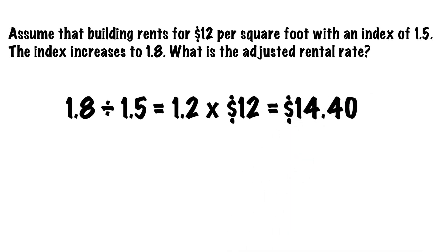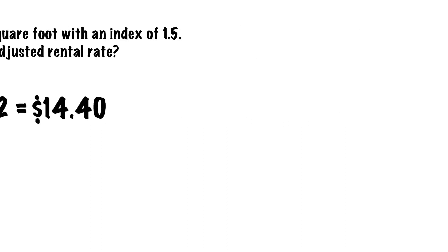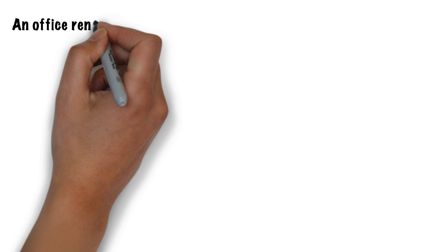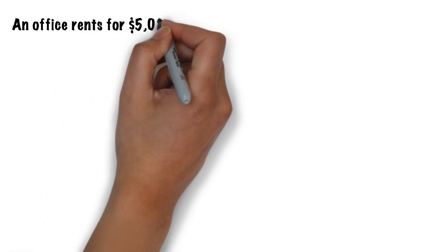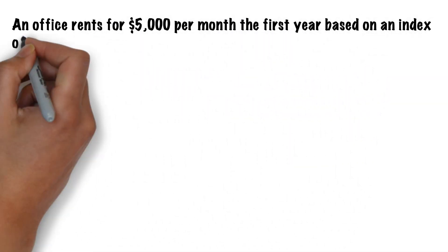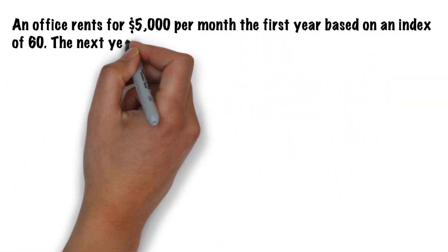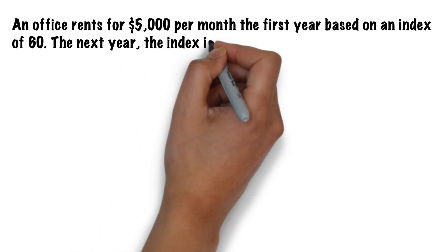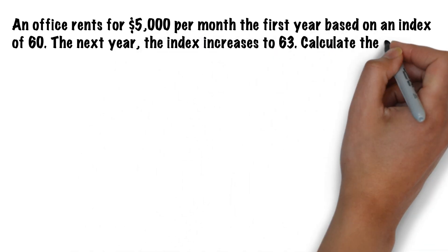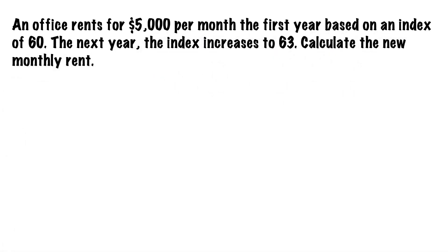That's all there is to it. Now it's your turn — give it a try. An office rents for five thousand dollars a month in the first year based on an index of 60. Next year the index increases to 63. Calculate the new monthly rent. Go ahead and hit pause, come up with your answer, and when you're done press play for the solution.